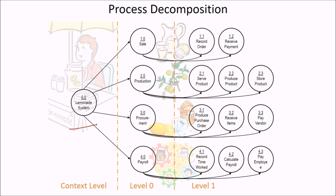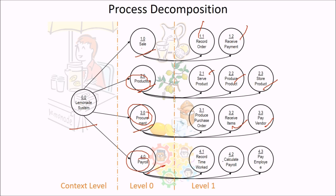This is how we decomposed the process. We started with the lemonade system. Level 0 included sale, production, procurement, and payroll. Sale was divided into record order and receive payment. Production was divided into serve product, produce product, and store product. Procurement was divided into produce purchase order, receive items, and pay vendor. Payroll was divided into record time worked, calculate payroll, and pay employee.